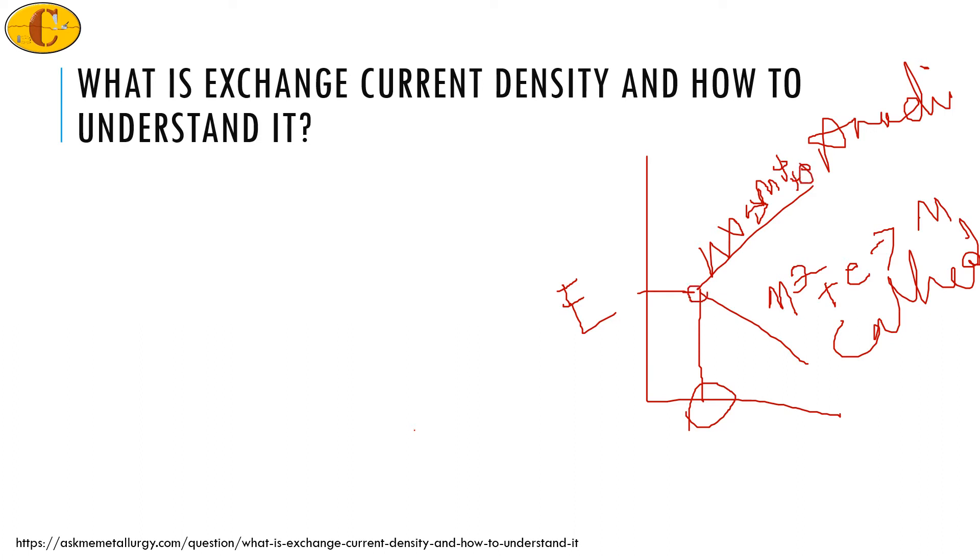This point is the equilibrium position. The equilibrium position means that these two reactions will occur at the very same time and at the very same current density. This is the exchange current density.